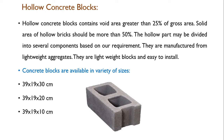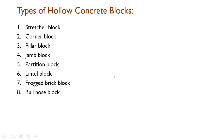Hollow concrete blocks are manufactured from lightweight aggregate, making them lightweight and easy to install. Here you can see 2 hollows are provided. The part between 2 hollows is called a rib, and it should be minimum 5 cm. Sizes are 39×19×30, 39×19×20, and 39×19×10 cm.